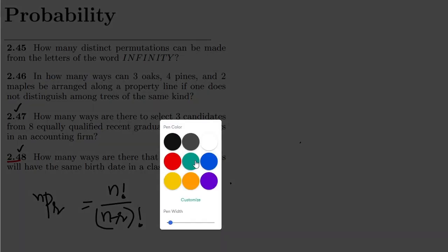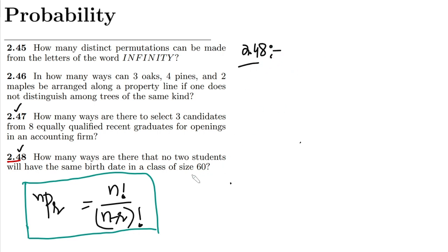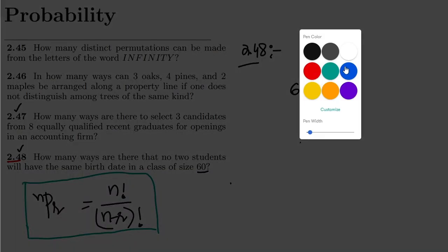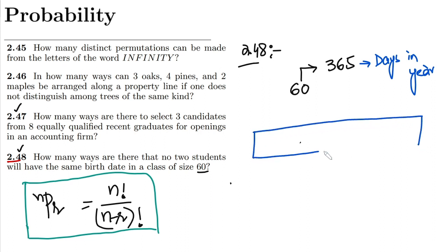I have already written the permutation formula here. In question 2.48, the total number of candidates we want to arrange is 60, and these 60 have to be arranged from the total options of 365, which are basically the days in a year. So what is the concept here? We will have 60 slots.